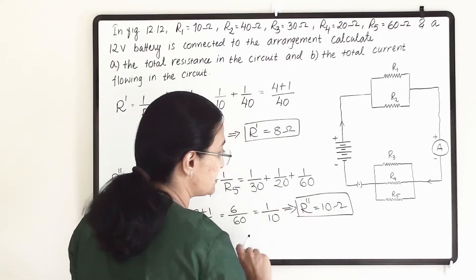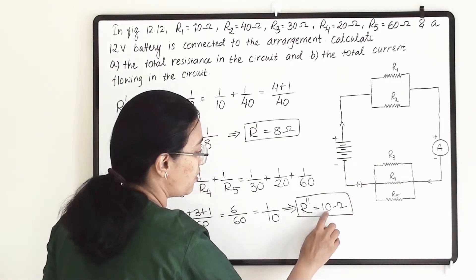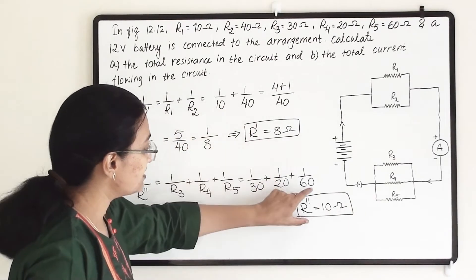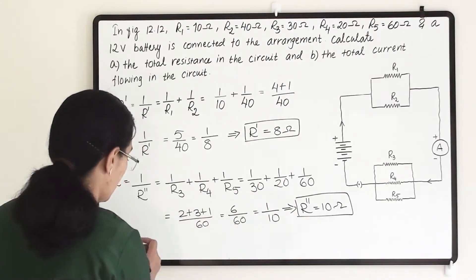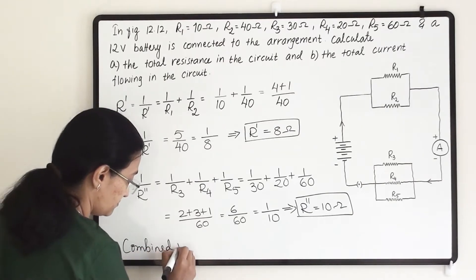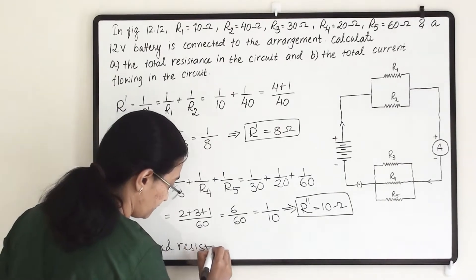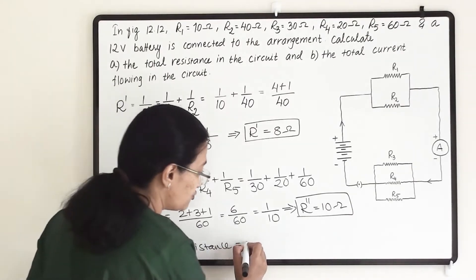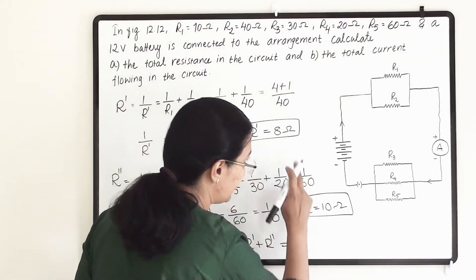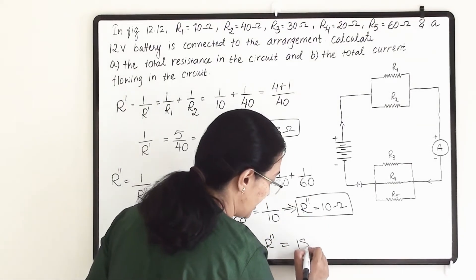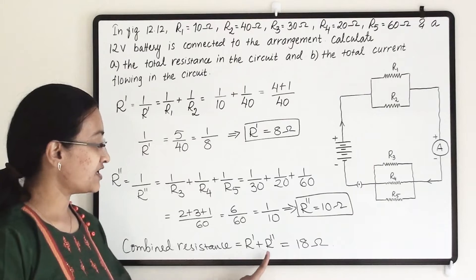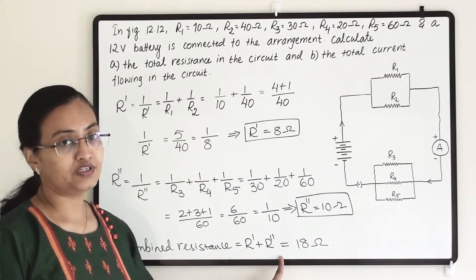Taking the reciprocal on both sides gives R double dash equals 10 ohm. Now, as discussed, the two units are in series with each other, so the combined resistance is R dash plus R double dash, giving us 8 plus 10 equals 18 ohm. So the total combined resistance of the circuit is 18 ohm.